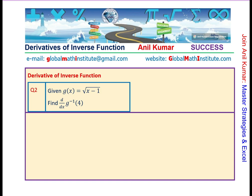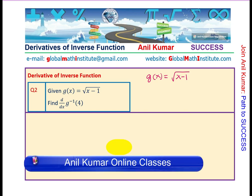Here is your second question. We are given g of x equals to square root of x minus 1. Now, this is increasing function whose inverse will also be a function.